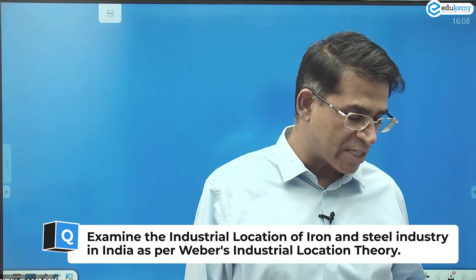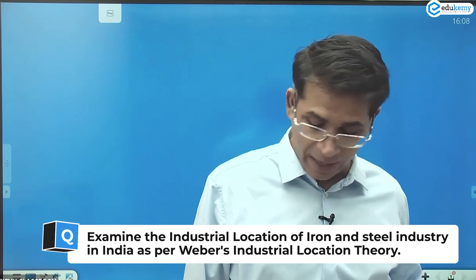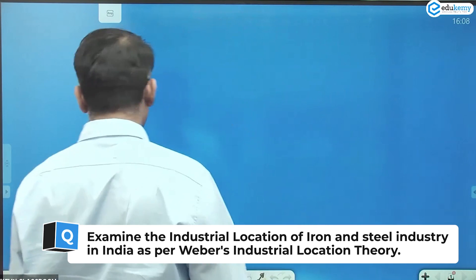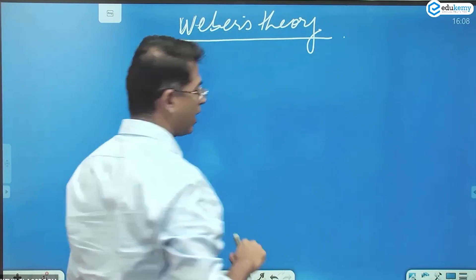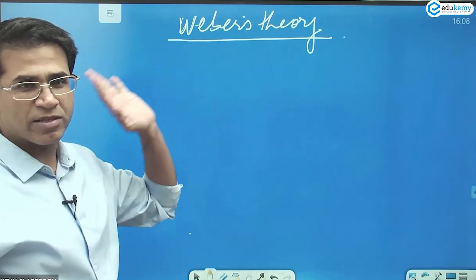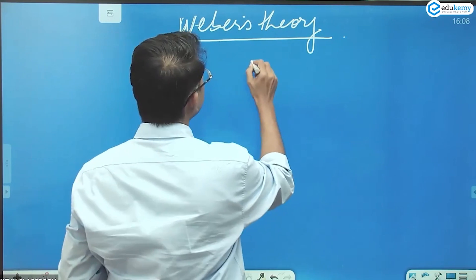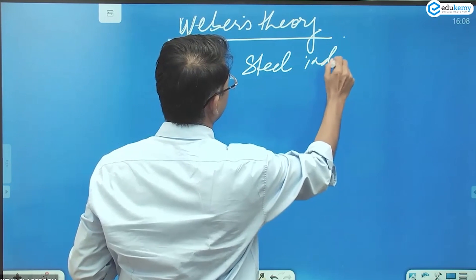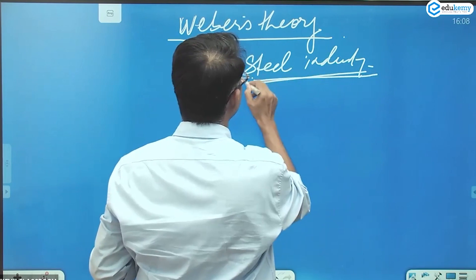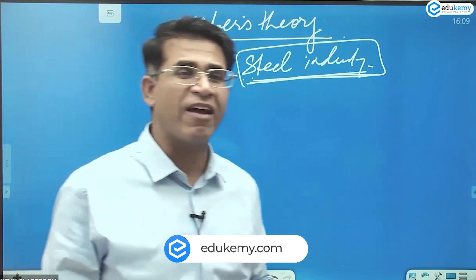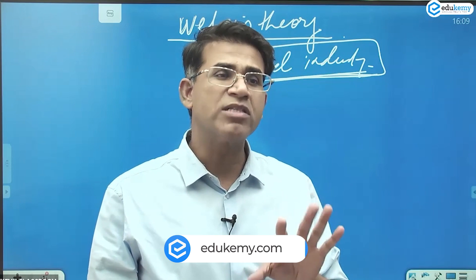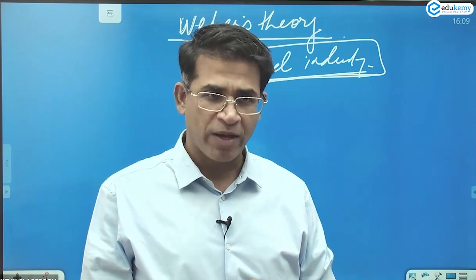Let's take up the questions now. The question is: examine the industrial location of the iron and steel industry in India as per Weber's industrial location theory. This is a straightforward question, but the reason we've asked it is to show you how to answer it. There are two questions on this and the two questions have to be answered differently.